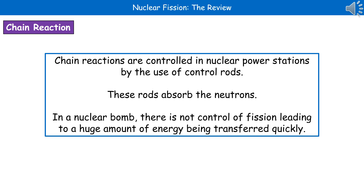Obviously, the last thing we really want happening inside our nuclear power stations are these chain reactions, because that just really wouldn't end well for anyone living within quite a large area of that nuclear power station. So the way we actually prevent a chain reaction inside a nuclear power station is through the use of a control rod. These rods are lowered into the reactor to absorb any additional neutrons, which then slows the reaction down.